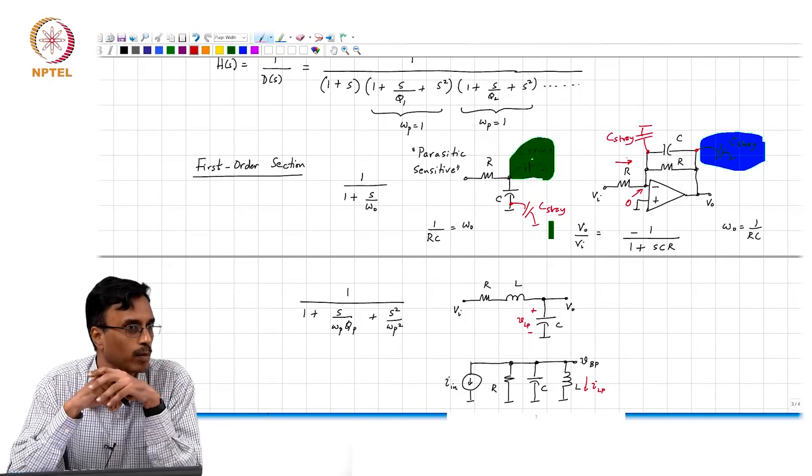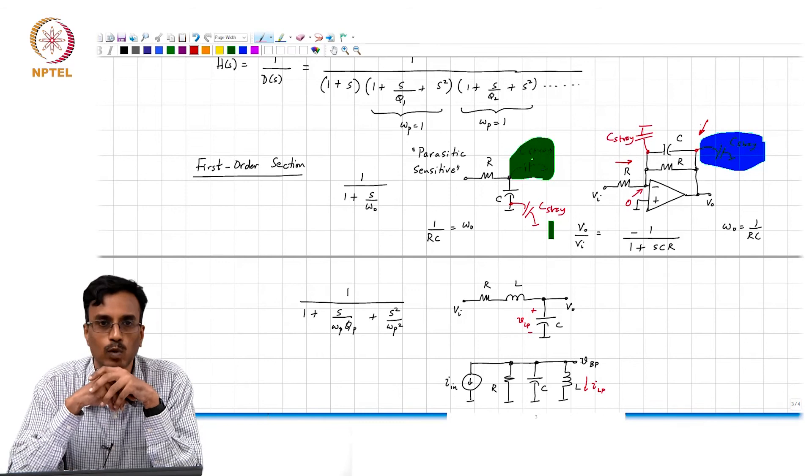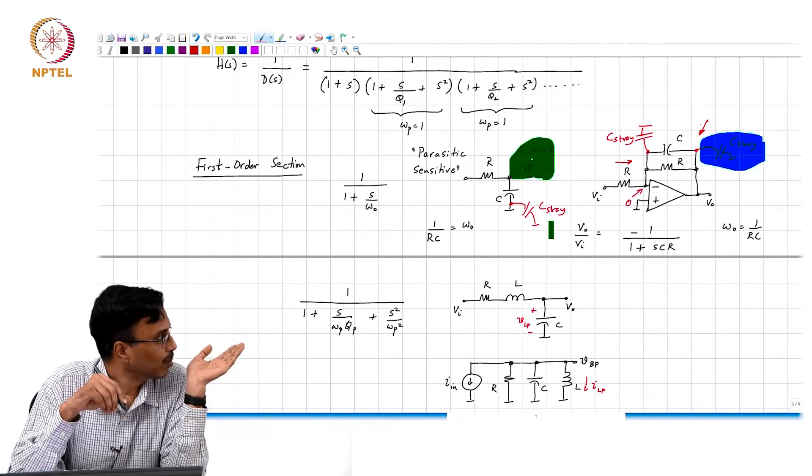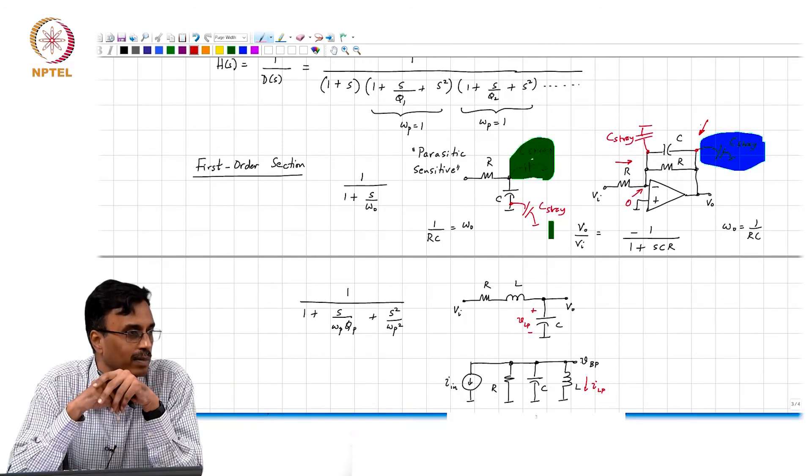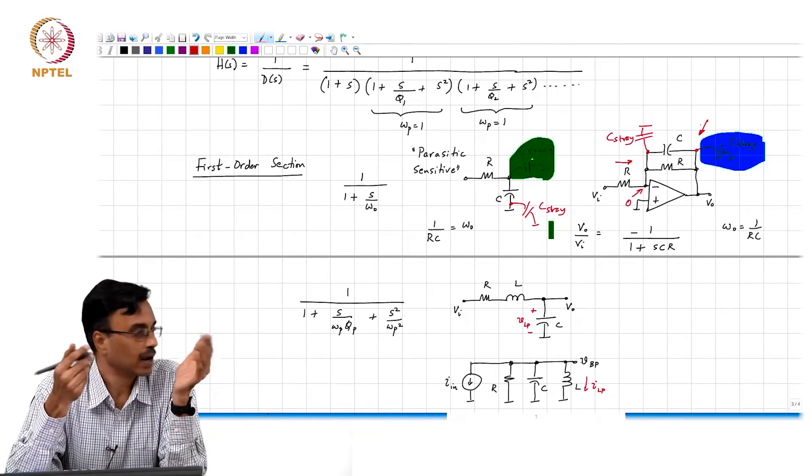Therefore, where will all this input current flow? V_i by R, where will it flow? It will flow through the parallel combination of R and C. Therefore, what comment can you make about that voltage? It is minus V_i by R divided by the same thing that we had earlier without this stray.